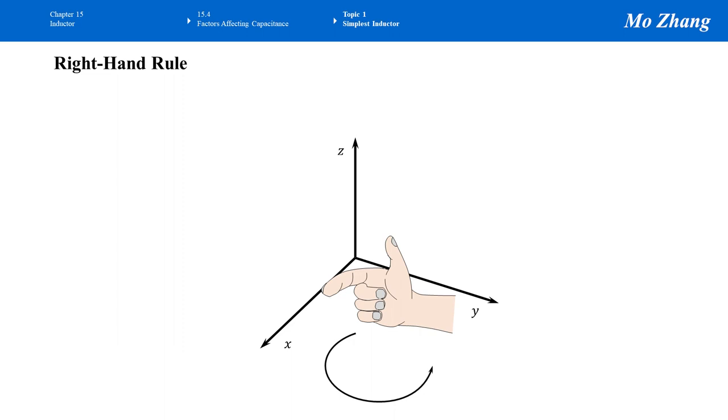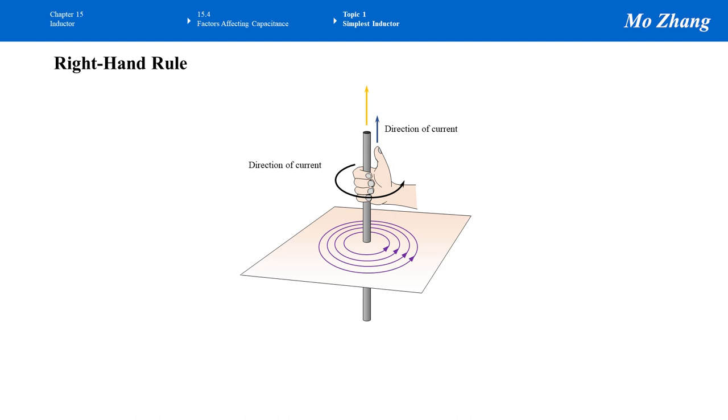When we apply the right-hand rule in 3D calculus to determine the X, Y, Z coordinates direction, this is how it works. First, the index finger points at the positive side of the X axis. Then the other fingers, they point to the positive Y axis. The direction that the thumb is pointing at is the positive Z axis.